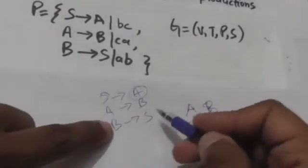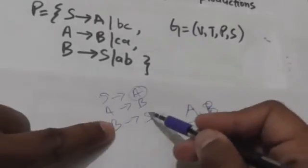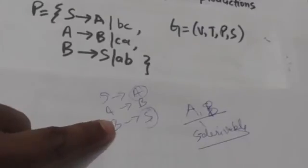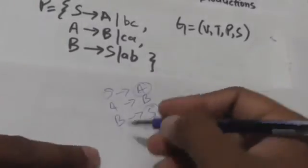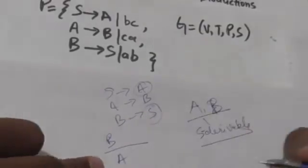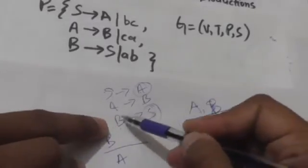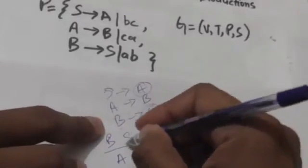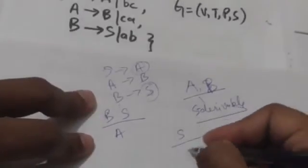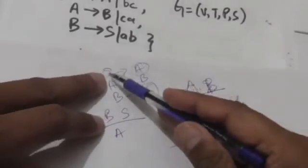Now see production B derives S — B is S-derivable, but the right-hand side of this production is S itself, so S is not newly added. Next, looking at A derives B: B is A-derivable. Since B derives S and B is A-derivable, S is also A-derivable. Now see production B derives S, so S is B-derivable. Since S derives A and S is B-derivable, A is also B-derivable.